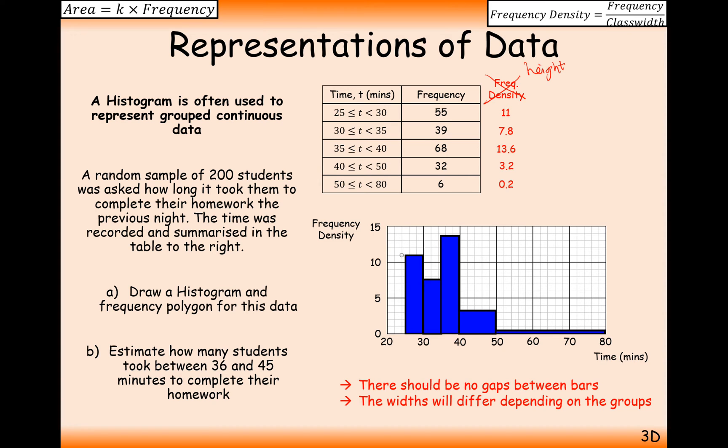Now, if you were to work out the areas of each of these bars in this case here, we're going to see that the area is exactly what we have here on the frequency column. So in this case here, the first bar has an area of 55, etc.